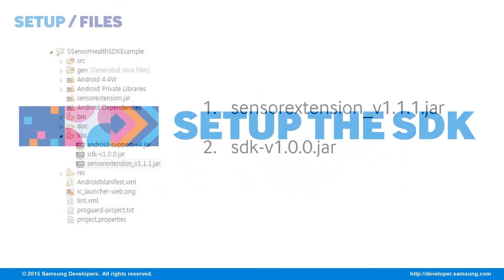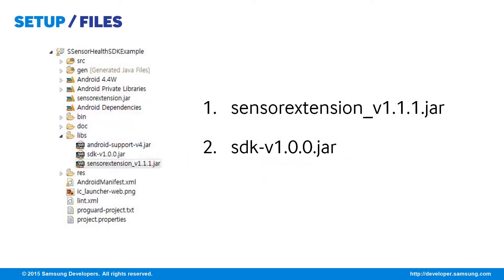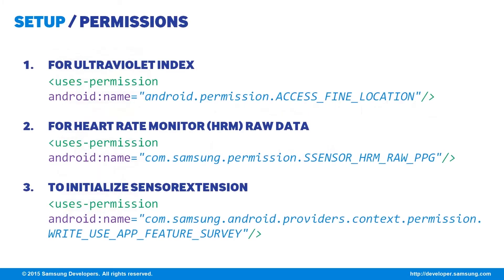To start off, make sure to import the Sensor Extension SDK jar files to your LIBS folder in Eclipse. Then for permissions, add Access Fine Location for the ultraviolet index and S-Sensor HRM Raw PPG for the heart rate monitor. To be able to initialize the Sensor Extension, add the Right Use AP Feature Survey permission.